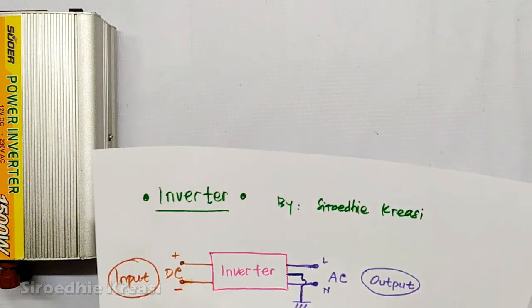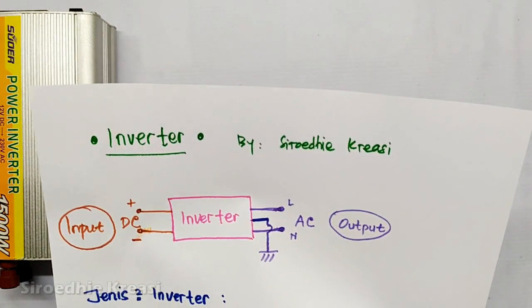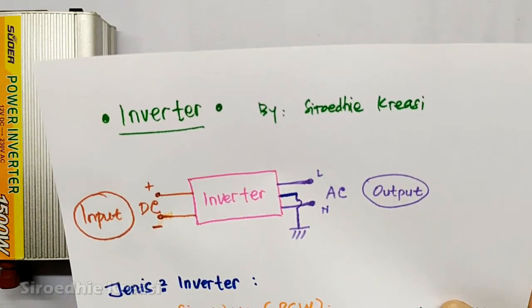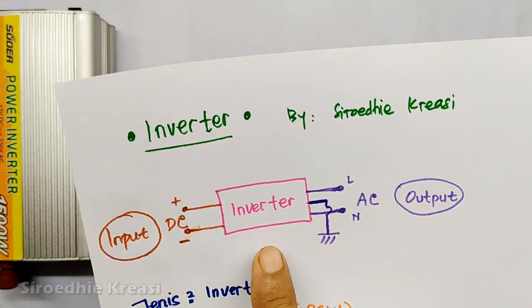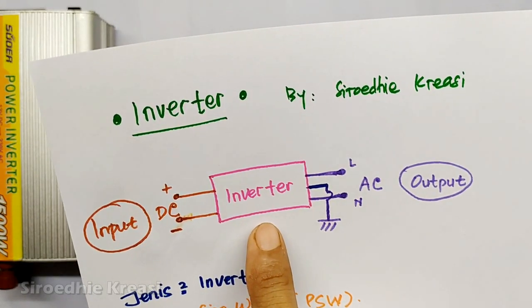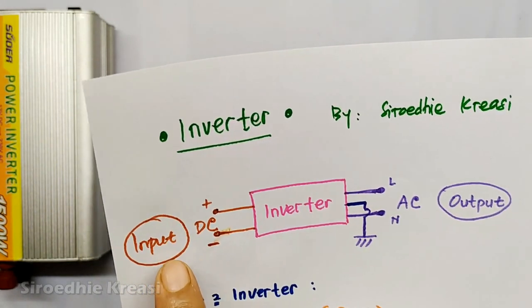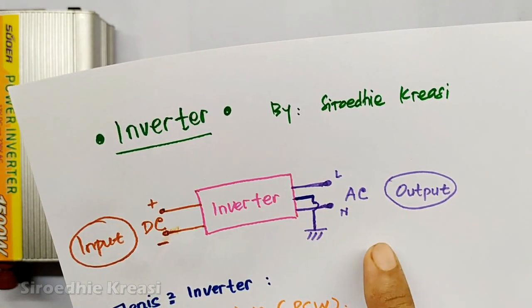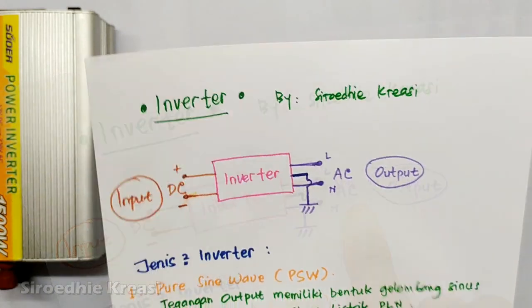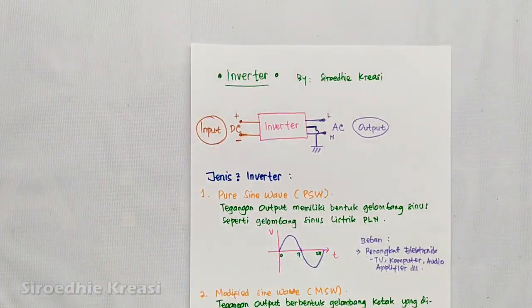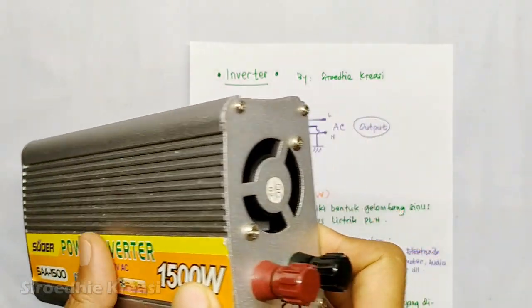Baik kawan-kawan, sebelum kita lanjutkan pada pemasangan, ada baiknya kita lihat diagram berikut ini. Jadi pengertian inverter itu adalah suatu peralatan elektronika daya yang mana inputnya berupa tegangan DC, kemudian outputnya adalah berupa tegangan AC. Jadi kalau kita kaitkan dengan peralatan yang ada di sini, maka ini adalah sumber tegangan DC atau inputannya.